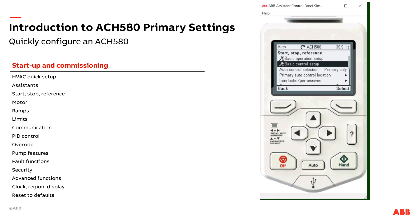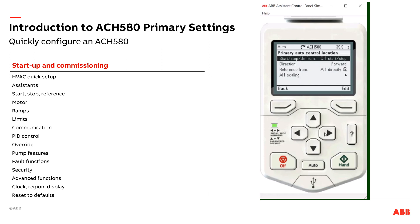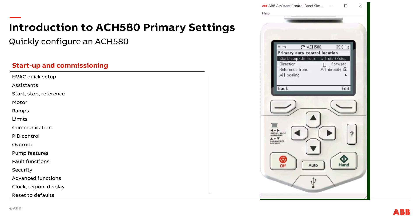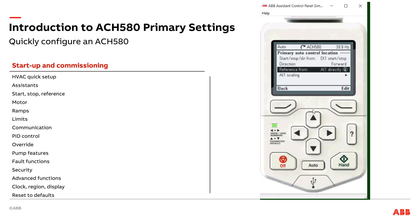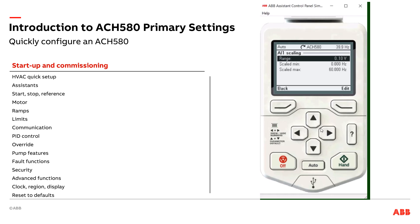As it implies, this controls where my start/stop signal is coming into the drive and where my speed reference is. I can come to my primary auto control location — that's when the drive is in auto mode. Typically I want my start/stop on digital input one, but I could change that. There are some pre-canned selections, but digital input one is typically the way to go. Then I set my direction and where I'm getting my speed reference from. Analog input one is typical, although sometimes I might change that to embedded fieldbus for BACnet start/stop and speed reference. I can also do scaling here — 0 to 10 volts equals 0 to 60 hertz — or change that to 4 to 20 milliamps, or set scaling above 60 hertz for fan array applications.